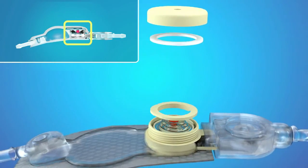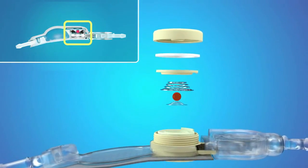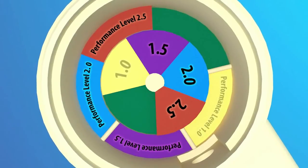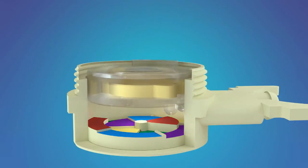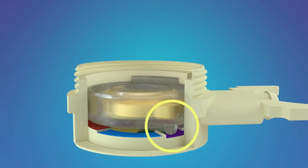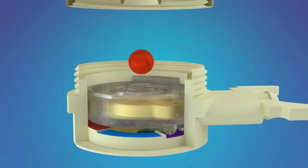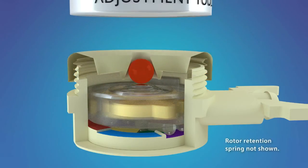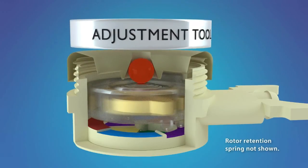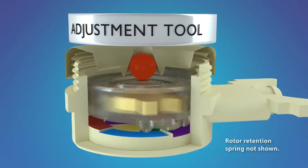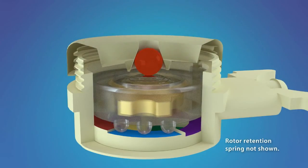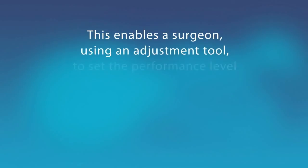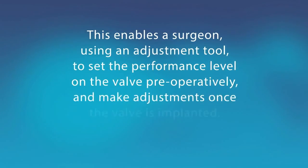The valve mechanism consists of a ruby ball and circular spring design. At the base of the valve mechanism, there are five concentric platforms of various heights. On top of the valve mechanism base is a plastic rotor element which contains a magnet. The rotor element has feet that are designed to engage with a platform stock. Mounted on top of the rotor element is a pressure flow spring which applies pressure onto a ruby ball. The platform design at the base of the valve mechanism requires the rotor to be magnetically raised onto a higher or lower platform through the use of a Medtronic adjustment tool. This enables a surgeon, using an adjustment tool, to set the performance level on the valve preoperatively and make adjustments once the valve is implanted.